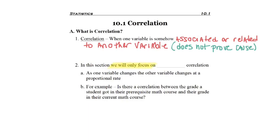So in this section, when we're talking about correlation, we're going to be focusing only on linear correlation. This means as one variable changes, the other variable changes at some sort of proportional or direct rate.